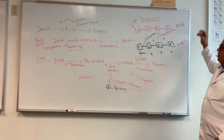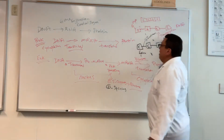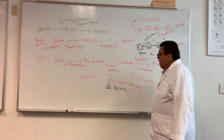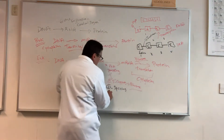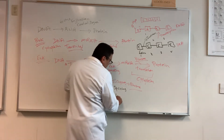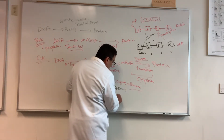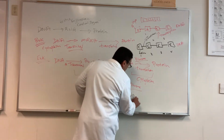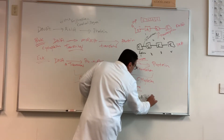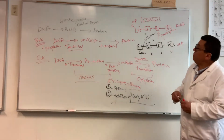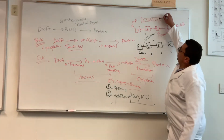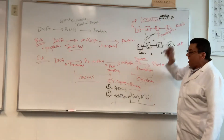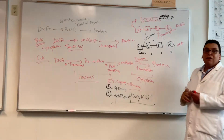Removal of the introns is called splicing. You don't need to do any of that in bacteria because they don't have introns. The last processing event is the addition of a poly-A tail, which means adding a long stretch of adenine nucleotides at the three-prime end of the RNA. It looks like a tail made up of many adenines.